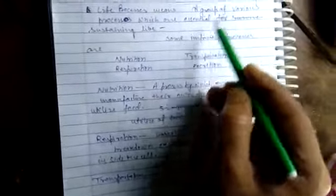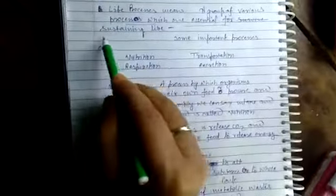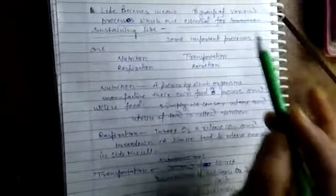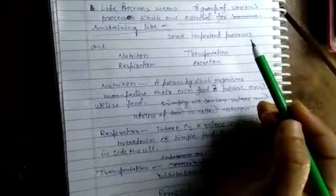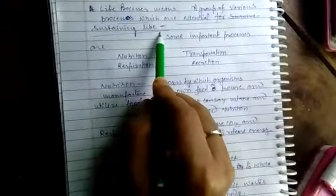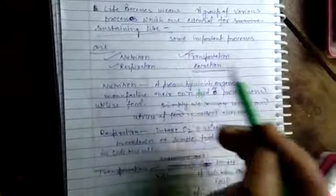Life processes means a group of various processes which are essential for sustaining life. It means there are some special phenomena that happen inside our body which are essential for sustaining life. Some of the important processes are nutrition, transportation, respiration, and excretion. These are much essential for survival.